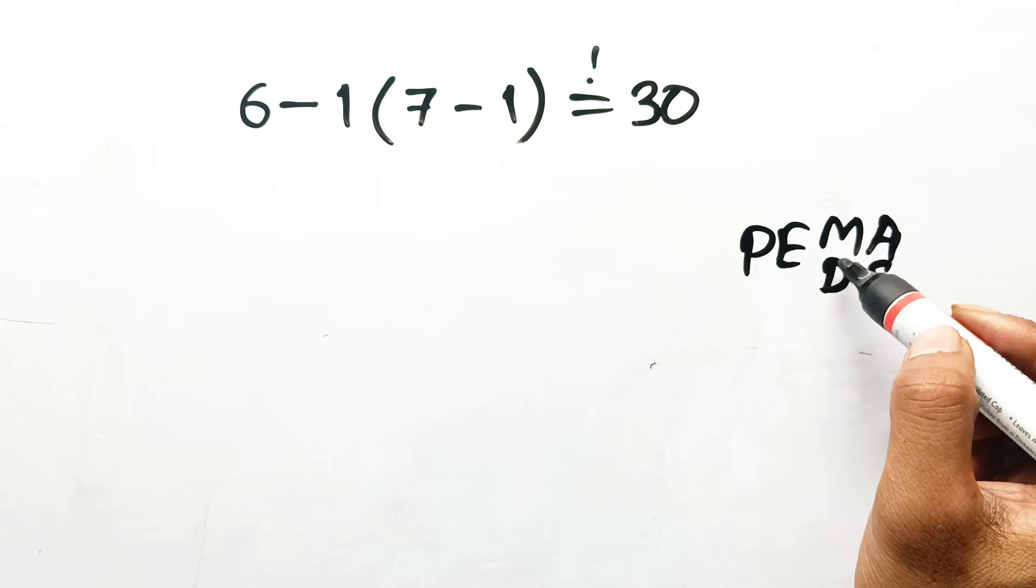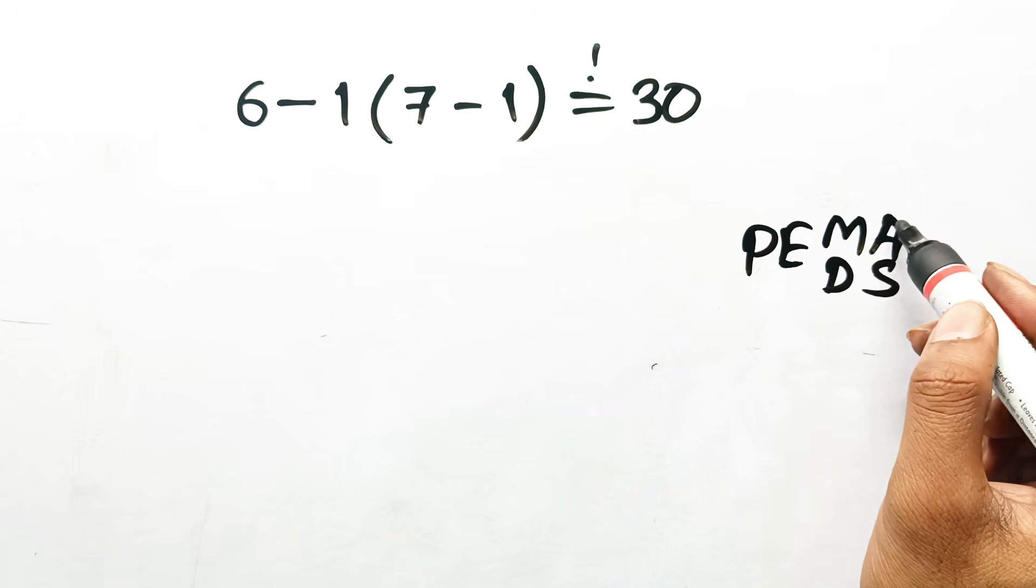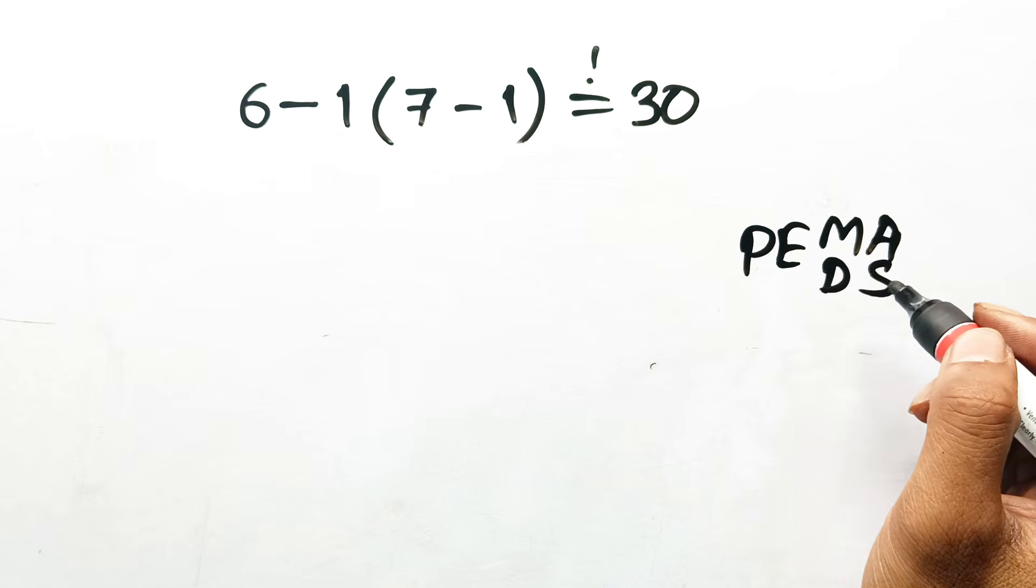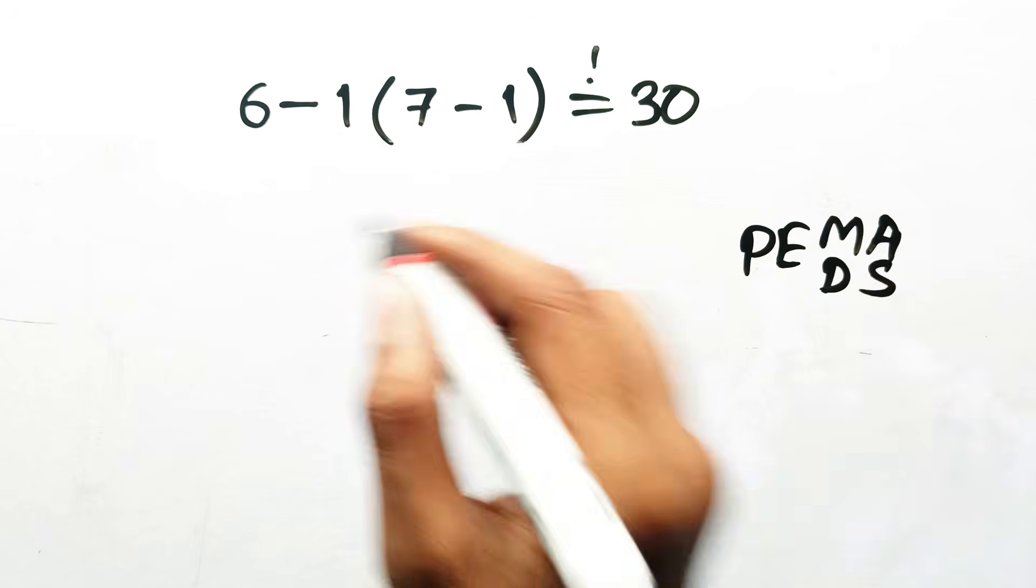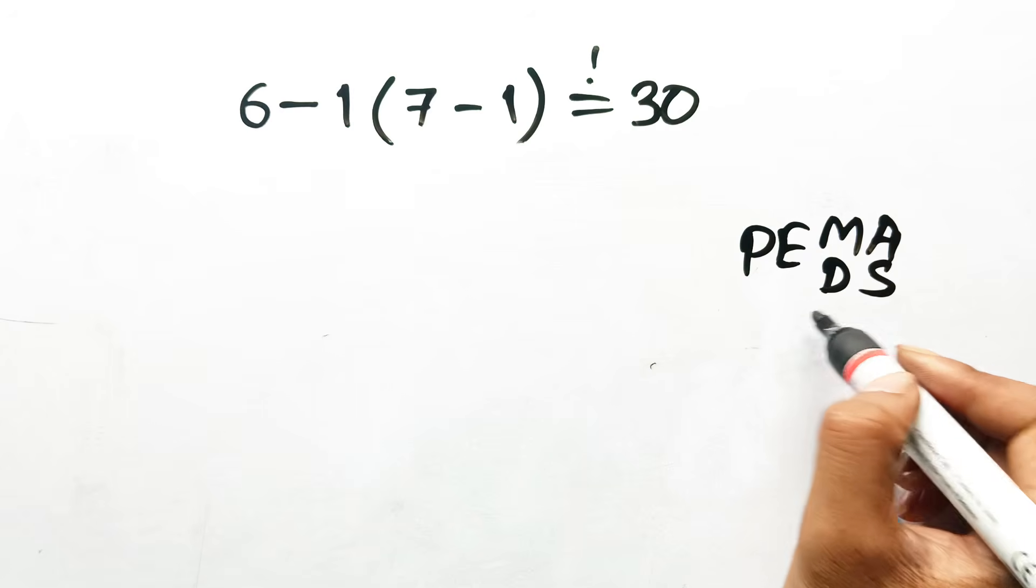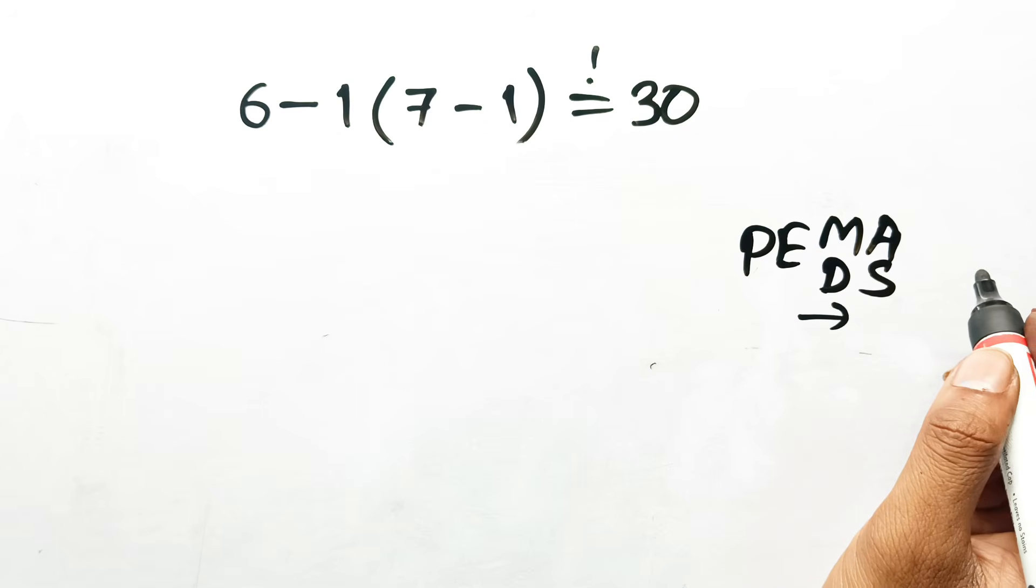multiplication and division are done left to right, same as addition and subtraction. That means the subtraction doesn't automatically jump ahead of multiplication. It happens only in the correct left to right sequence after parentheses are resolved.